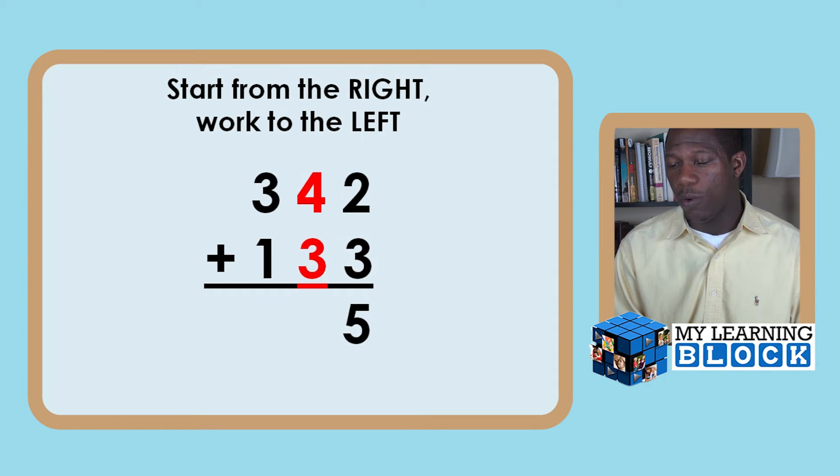Then we will go to the next one and we see four plus three. But in reality we know, and you want your child to realize, that instead of four plus three it's really 40 plus 30. But they're just going to focus on the four and the three because we already have a five in the ones place. 40 plus 30 or four plus three equals 70.